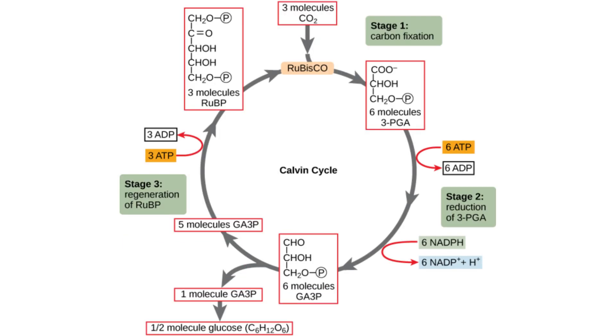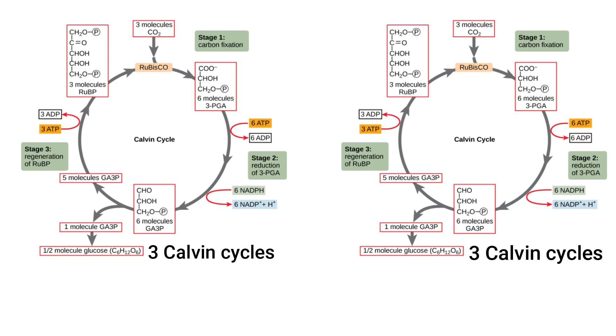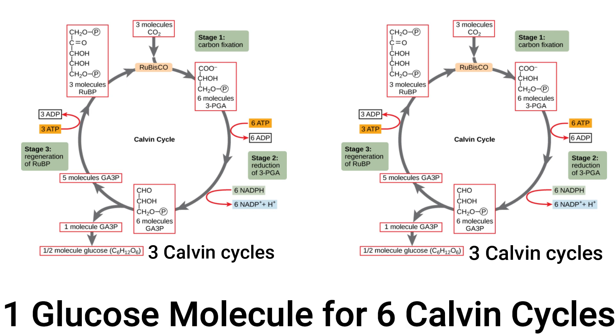However, in order to actually make one 6-carbon glucose molecule, two G3P molecules must join together, so two must exit the Calvin cycle. Thus, when two G3P exit the Calvin cycle, they make one glucose for every six Calvin cycles.